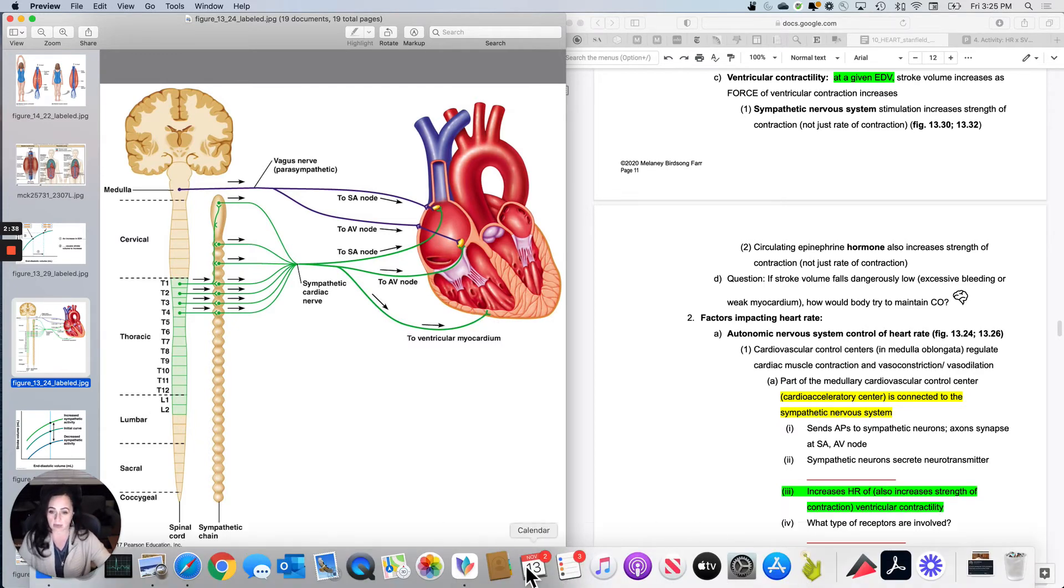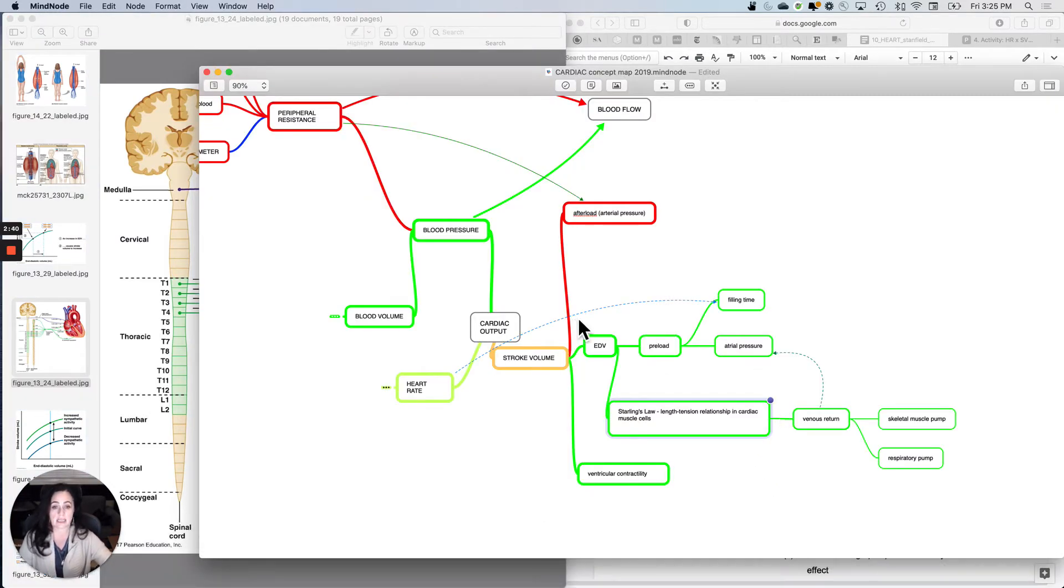So this is independent of volume that was in there. Keep the volume that's in there constant, and then increasing ventricular contractility with the sympathetic nervous system will increase the stroke volume.